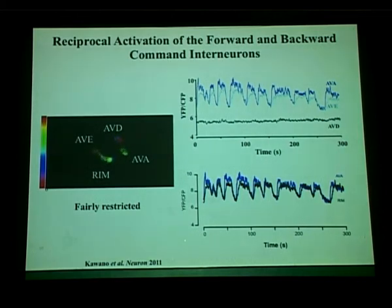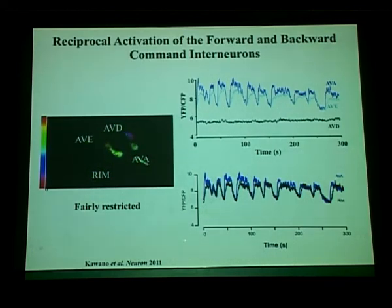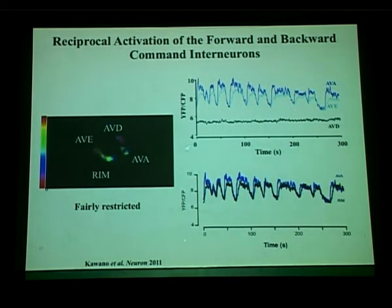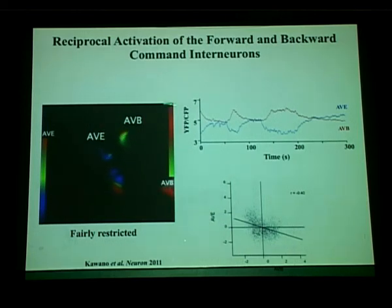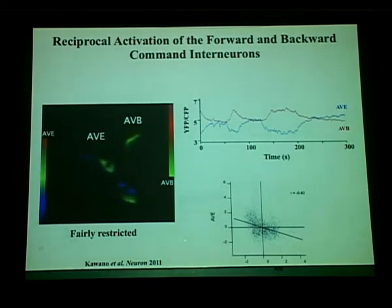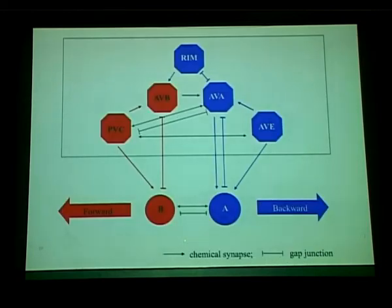We confirmed this anti-correlation in vivo by simultaneously imaging three or four different classes of pre-motor interneurons together. The AVA and AVE neurons show highly synchronized activity, with the exception of AVD, which does not contribute activity during spontaneous movement — only becoming active upon sensory stimulation. When we image opposite classes together, the blue and red pre-motor interneurons have anti-correlated activity patterns, suggesting cross-inhibition between these two classes.